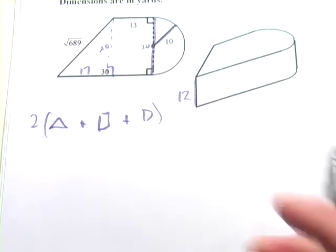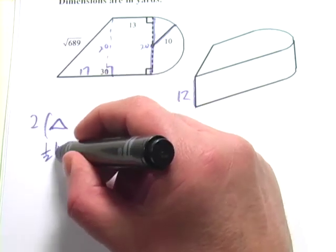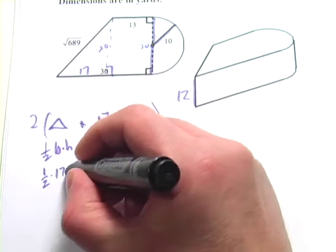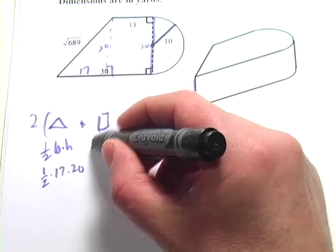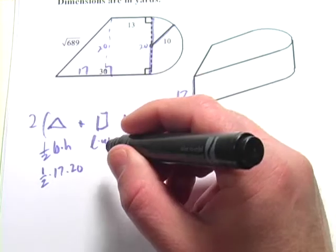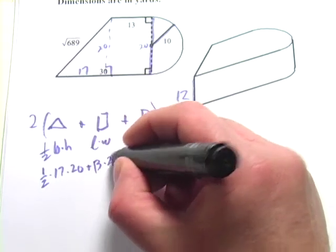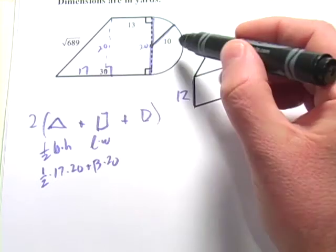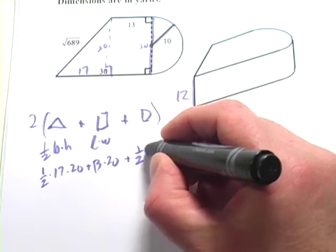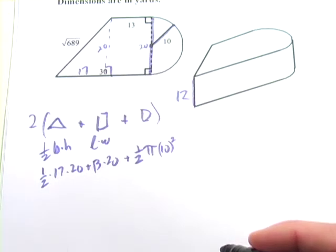So, the area of the triangle is 1 half the base times the height. And that, in this case, would be 1 half times 17 times 20. The area of the rectangle is just length times width, and that would be 13 times 20. And the area of a circle is pi r squared. We want half of that, so this is going to be 1 half times pi times r squared, so it's 10 squared.